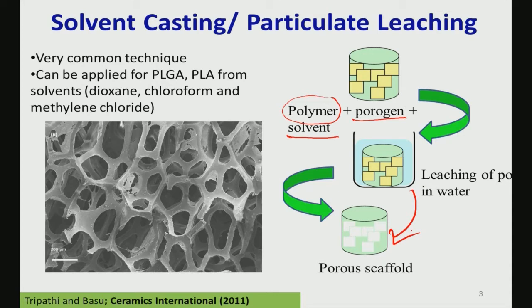This is a typical example of a porous scaffold made of hydroxyapatite, from our own research. The pores are of different sizes. Looking at cancellous bone structure, which is highly porous, the pore morphology is not uniformly identical — there is a distribution of pore size and pore shape, which is typical of biological materials like cancellous bone.